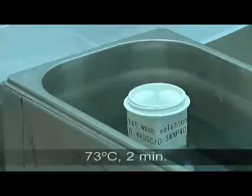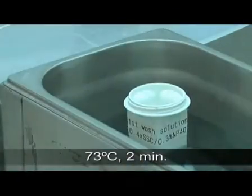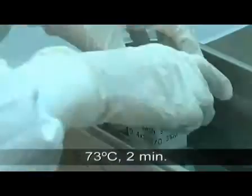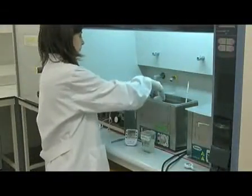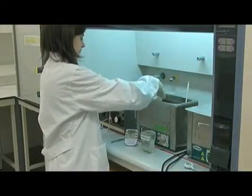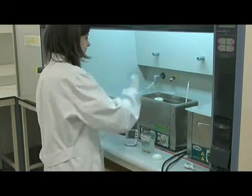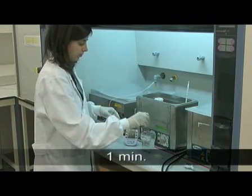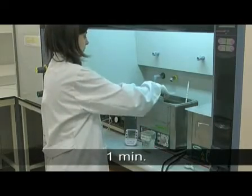The slides are submerged for two minutes in the first wash solution, pre-warmed to 73 degrees C. Then, they are transferred to the second wash solution at room temperature for a further minute. These two washes will help us eliminate any unspecific hybridization signals.